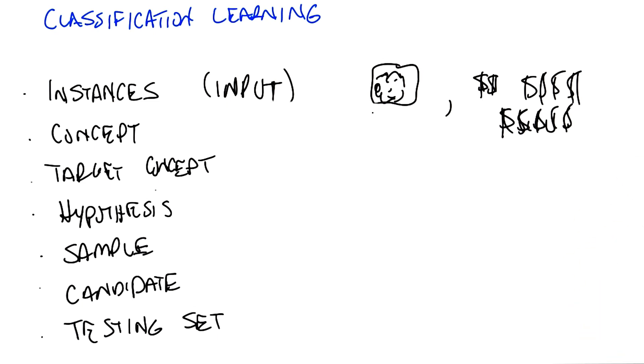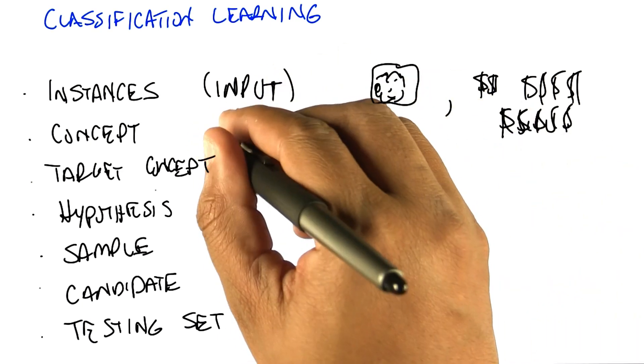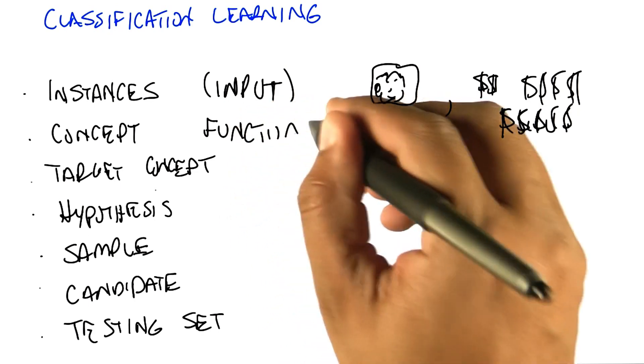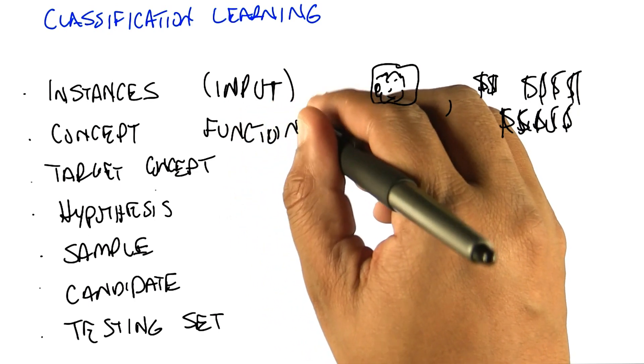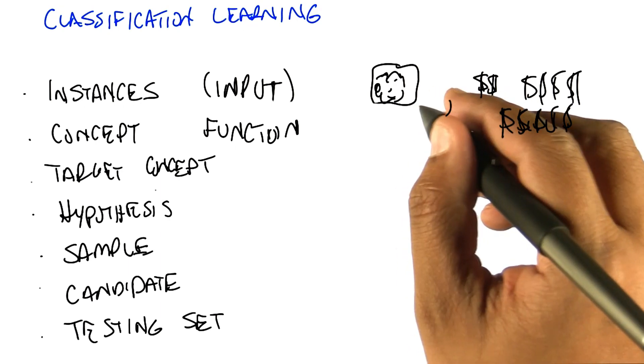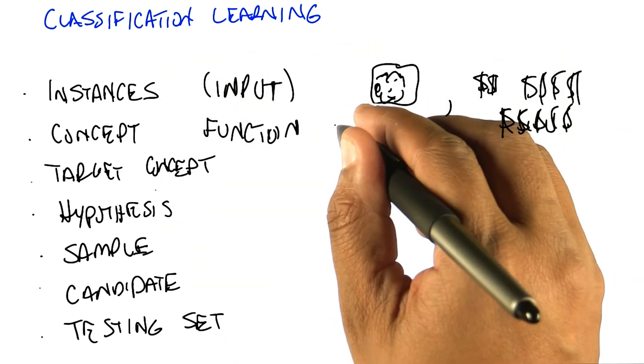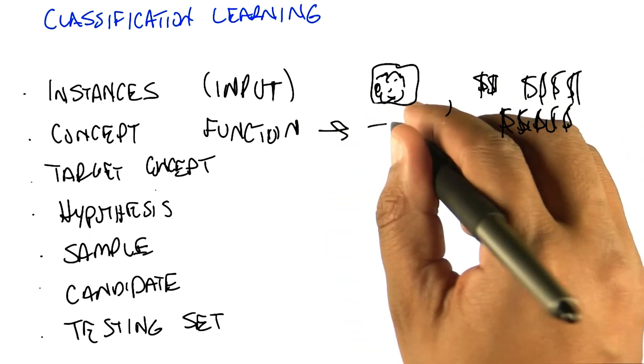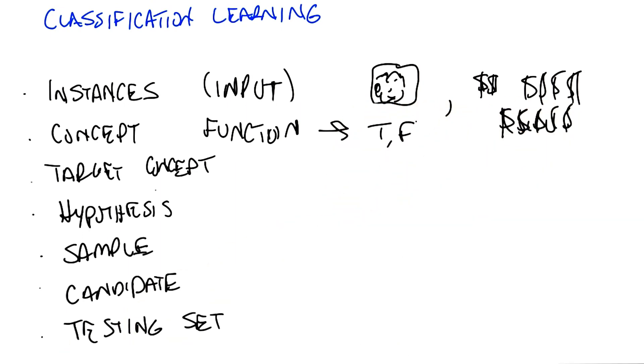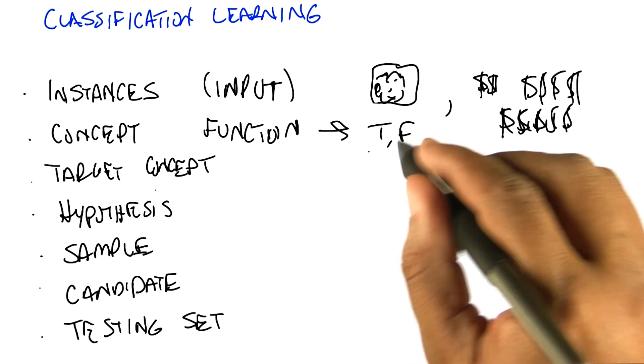So you have instances, that's the set of inputs that you have. And then what we're trying to find is some kind of function, and that is the concept that we care about. This function actually maps inputs to outputs. So it takes the instances and maps them, in this case, to some kind of output such as true or false. This is the category of the things that we're worried about. And for most of the conversation that we're going to be having, we're going to be thinking about binary classification, just true and false.